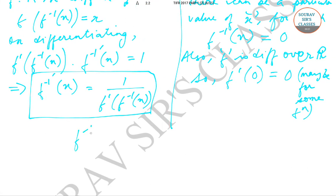We have already found out that f inverse dash x, the differentiation of this function, is equal to 1 by f dash f inverse x. Now if f inverse x is equal to 0 and f dash 0 is also equal to 0, in that case f inverse dash x is equal to infinity, which is undefined.